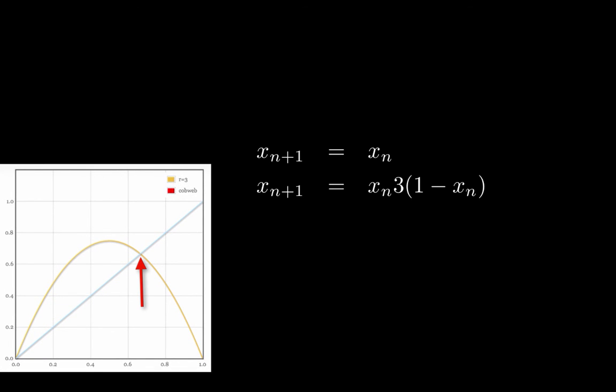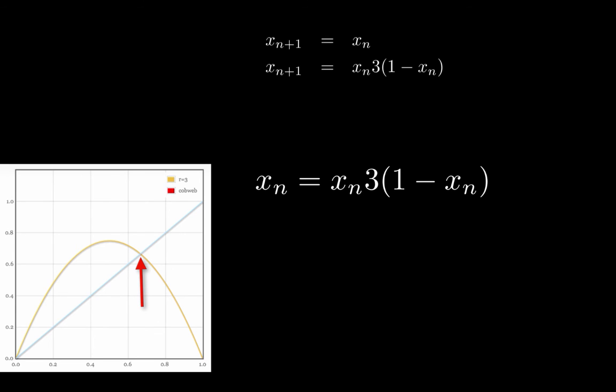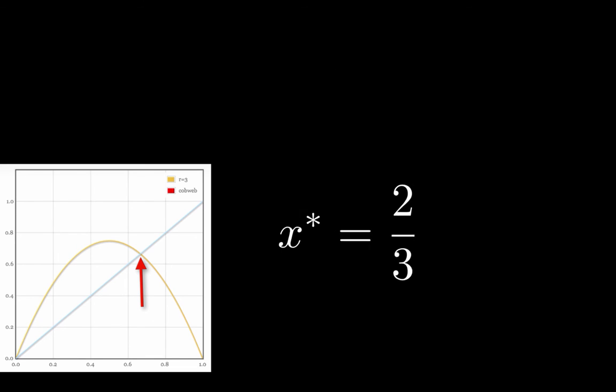To solve for this fixed-point, we simply need to solve this system of equations. To do so, we set them equal to each other, resulting in the following equation. Since we are not interested in the fixed-point that occurs at 0, we can eliminate these two xn, resulting in this equation. Solving this equation, we then see that the fixed-point occurs at 2 thirds.